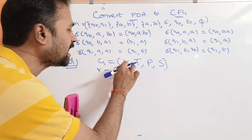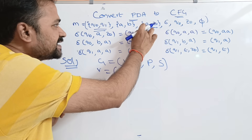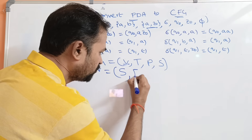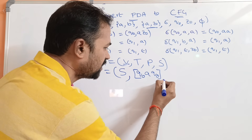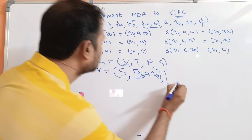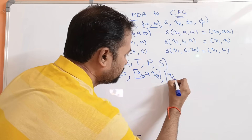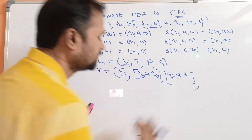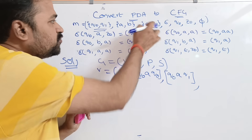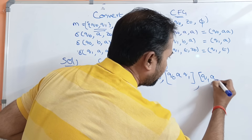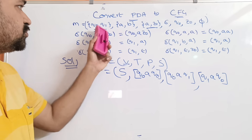For writing the variables, we have to combine Q with the stack alphabet (tau). Taking A as the middle symbol first: [Q0, A, Q0], [Q0, A, Q1], [Q1, A, Q0], and [Q1, A, Q1]. Next we take Z0 as the middle symbol: [Q0, Z0, Q0], [Q0, Z0, Q1], [Q1, Z0, Q0], and [Q1, Z0, Q1].